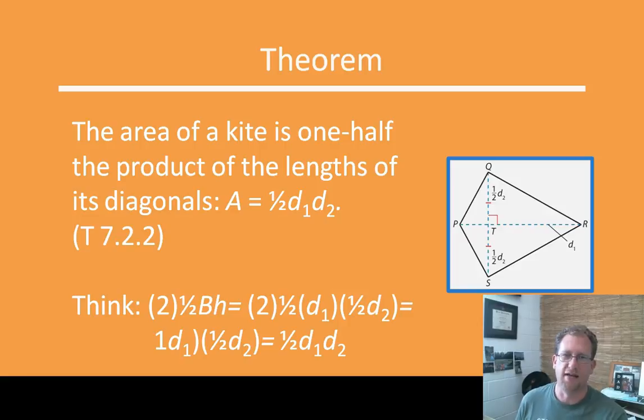And now the area of a kite. And a kite, remember, it's not just that thing at the end of your string. It is, in fact, a geometric shape. A kite has, just to review, two congruent consecutive sides and another two congruent consecutive sides, but not congruent opposite sides. That's a kite. The area of a kite is one-half the product of the lengths of the diagonals: A = ½d₁d₂.